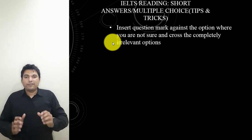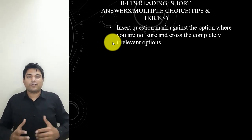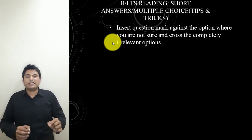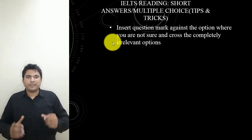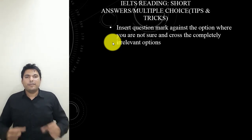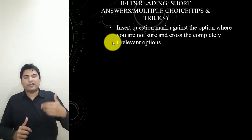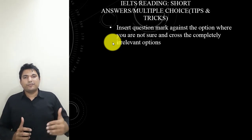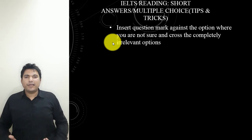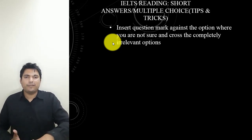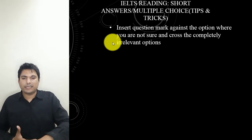If you think an option is correct but you are not sure, insert a question mark in front of it so you can come back to it. If you think an option is totally irrelevant, you can cross it out. It depends on your ability and how you personally deal with the question type.